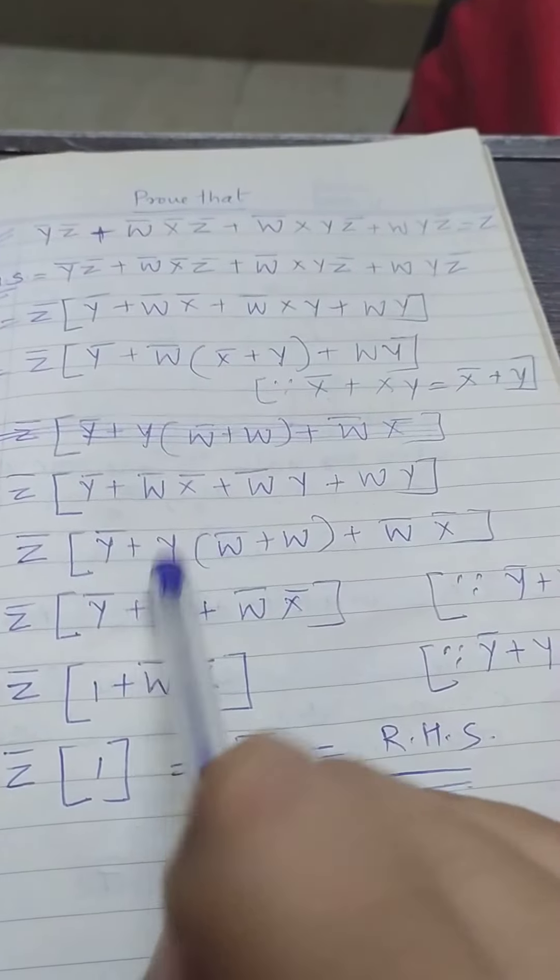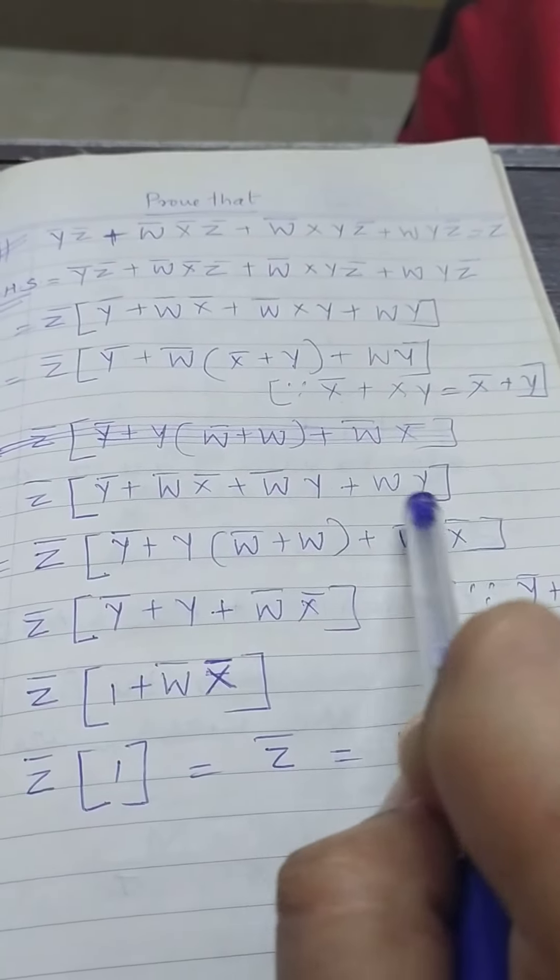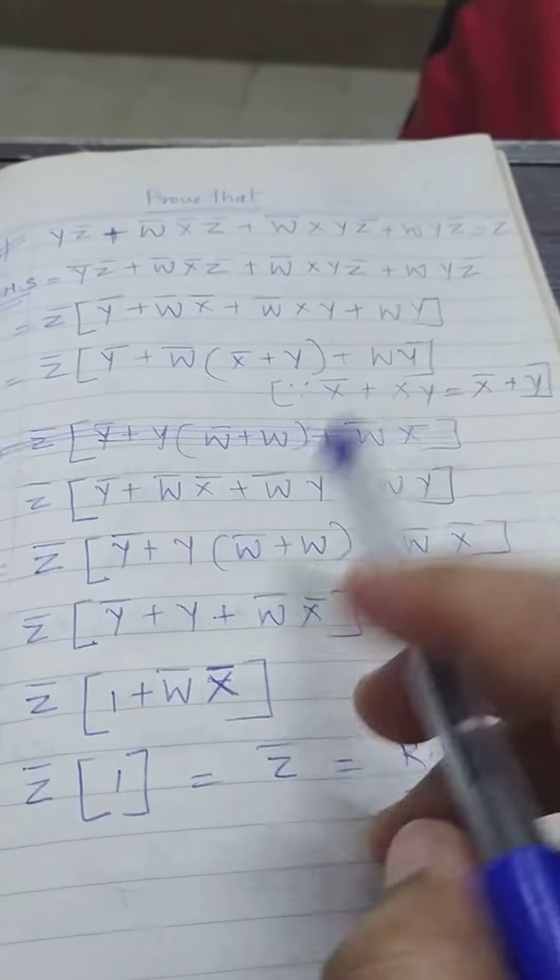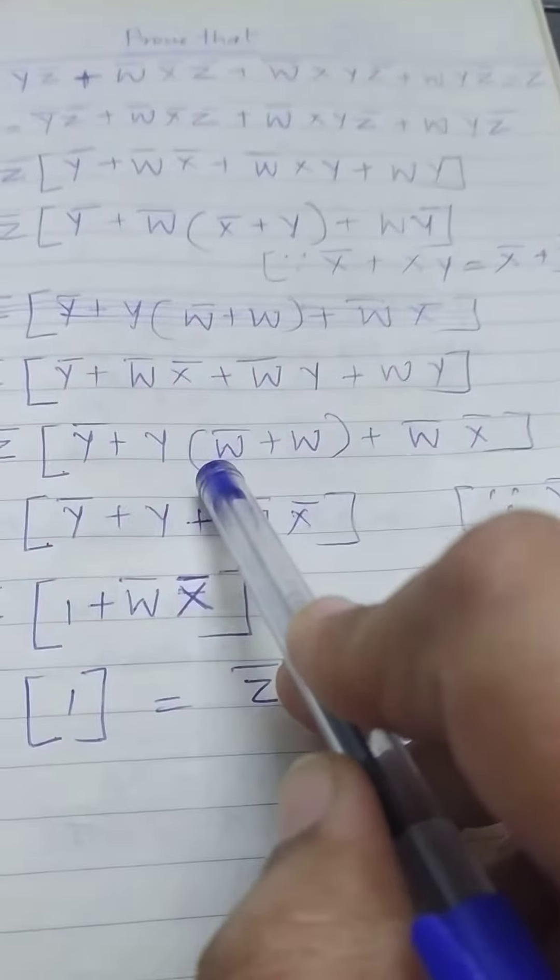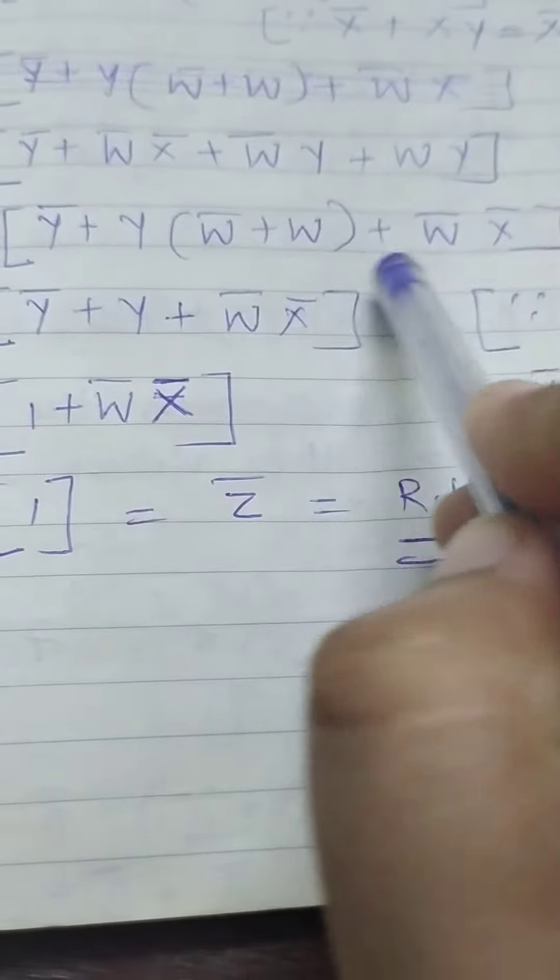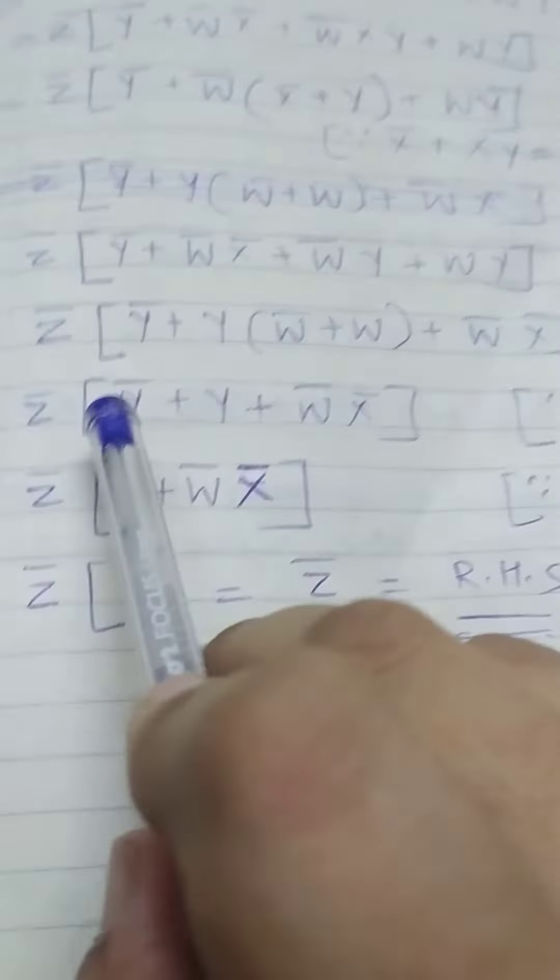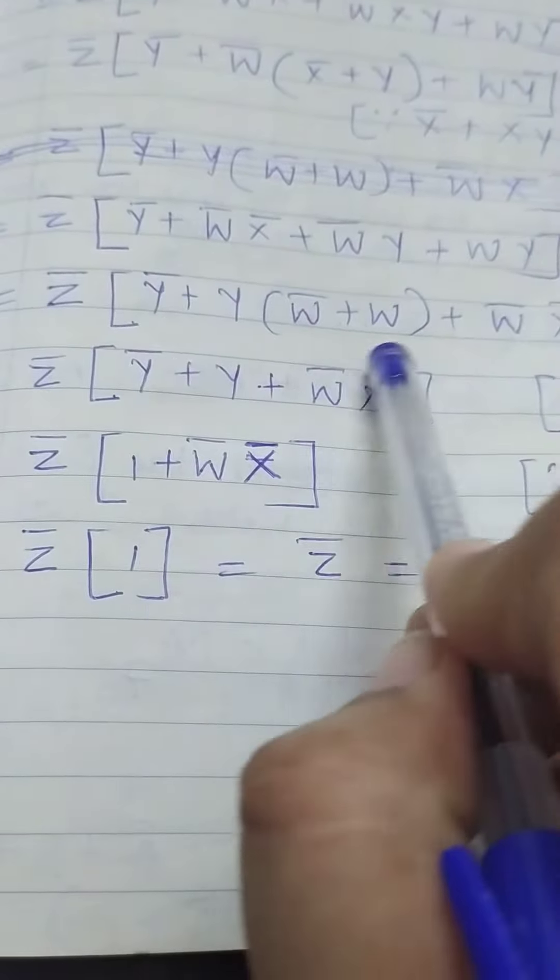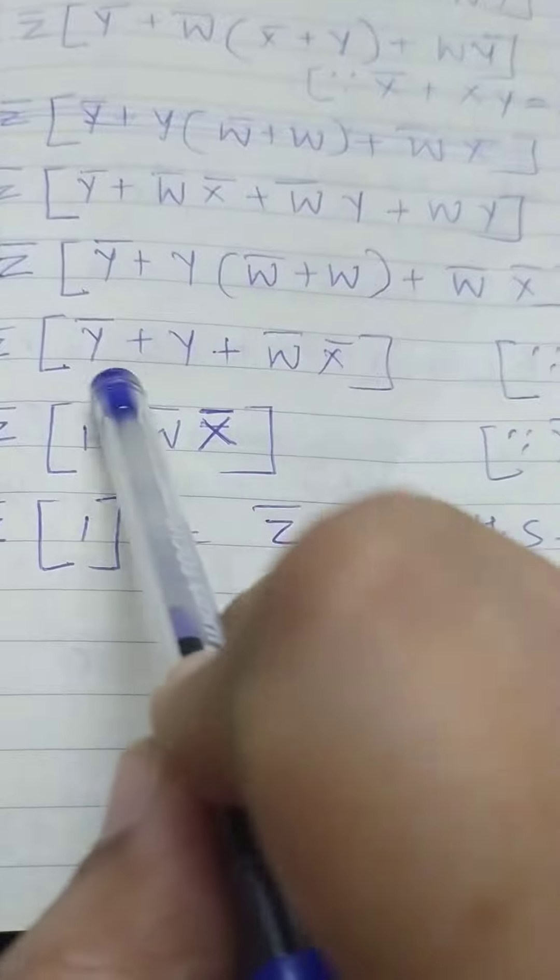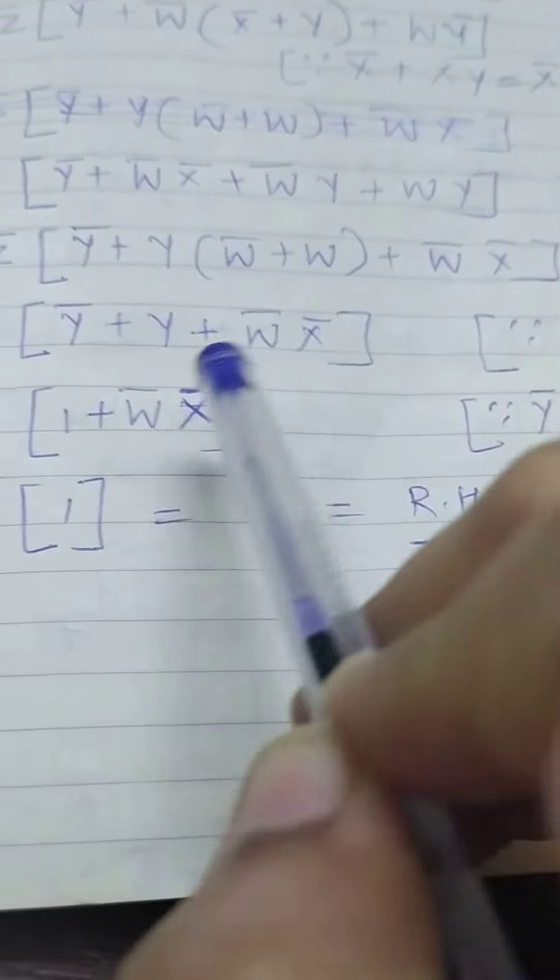y is common, these two are common if you can see it properly. So we will take y̅ plus y, w̅ plus w plus w̅x̅. In this way, w̅ plus w is simply 1. So y̅ plus y plus w̅x̅.